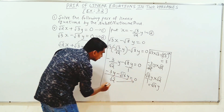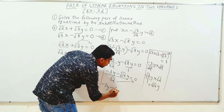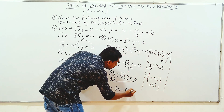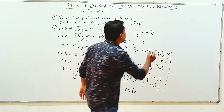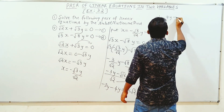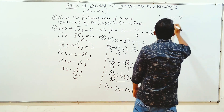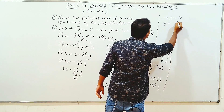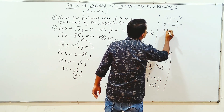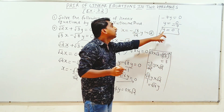Root 16y is equal to 4y. So minus 3y minus root 16y gives minus 3y minus 4y equal to minus 7y equal to 0 into root 2. 0 divided by minus 7 is equal to 0.